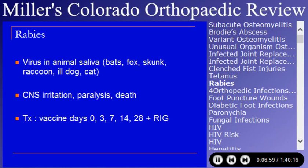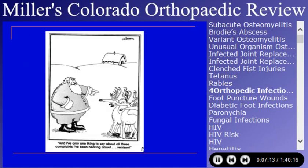Rabies presents as a neuroparalytic disease with central nervous system irritation, paralysis, and death. Treatment involves both vaccine and rabies immune globulin. Hoofed animals don't tend to get it, and rodents don't tend to be carriers of rabies.